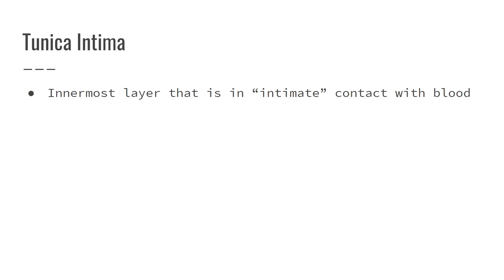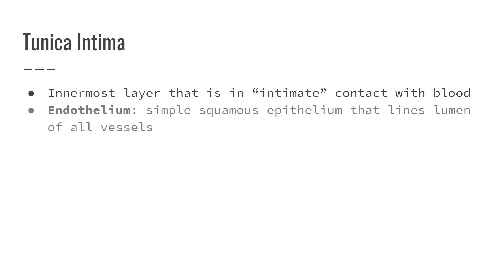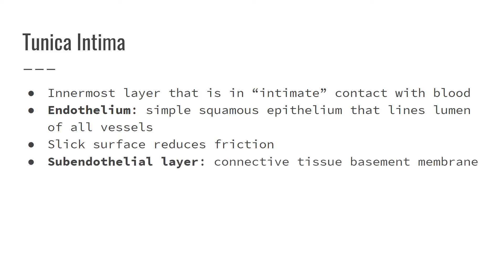The tunica intima is the innermost layer, named intima because it is in intimate contact with the blood — literally the blood runs through the walls of the tunica intima. Its structure is endothelium, which is simple squamous epithelium — one layer of epithelial cells very close together. They form a slick surface that reduces friction, giving the blood a smooth surface to flow through. Sometimes there is a sub-endothelial connective tissue layer, because epithelial tissue is avascular. If the blood vessel is large, it needs this extra connective tissue layer to supply it with nutrients.